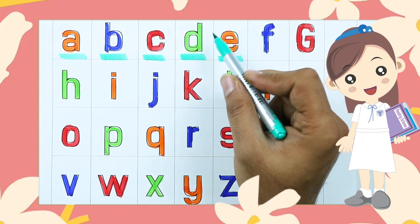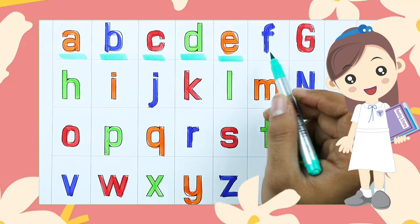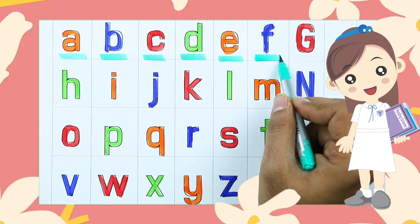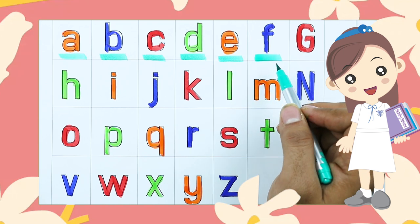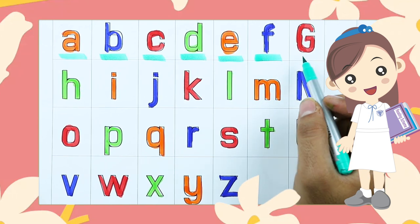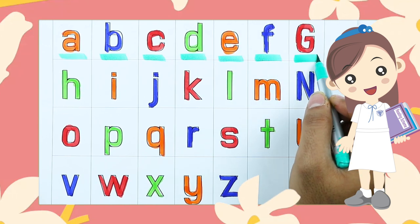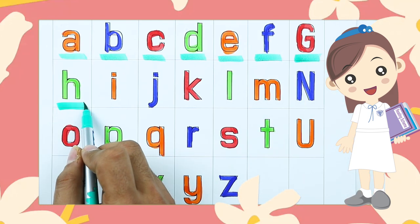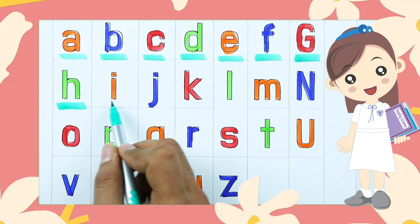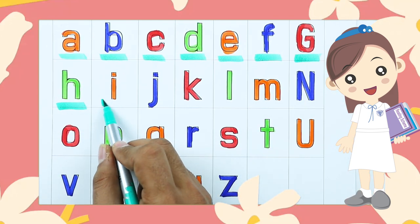E. E for elephant. F. F for fish. G. G for goat. H. H for hen.